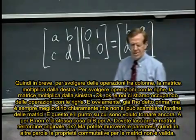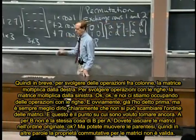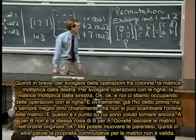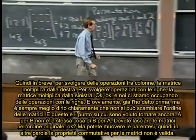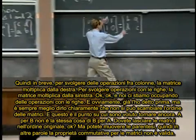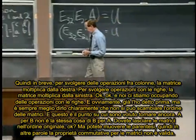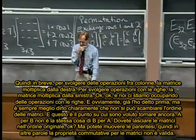So, in short, to do column operations, the matrix multiplies on the right, to do row operations, it multiplies on the left. And, of course, I mentioned in passing, but I better say it very clearly,